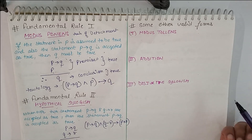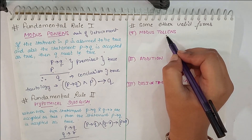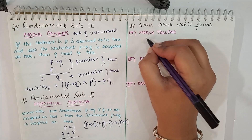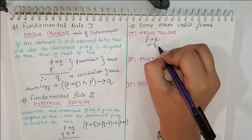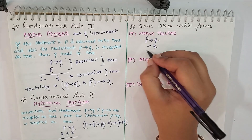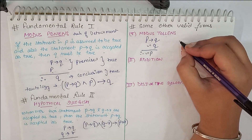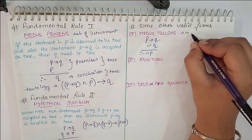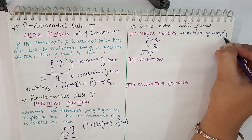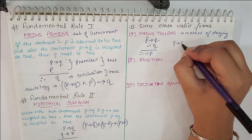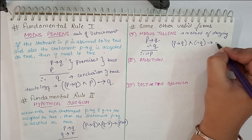Some other valid forms are also there. The first one is known as Modus Tollens. Modus Tollens says: if P implies Q is accepted as true, and there is a negation of Q — that is, Q is false — then the conclusion is the negation of P. Modus Tollens is also known as the method of denying. In tautology form: P implies Q, and negation of Q, gives negation of P.